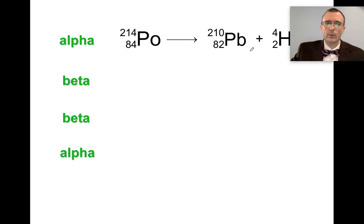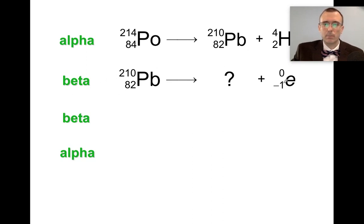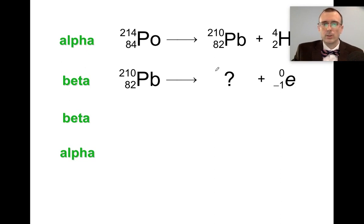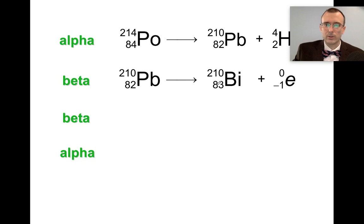Lead-210 itself is not stable and undergoes beta decay. We write down our beta particle and ask: what minus 1 is 82? The answer is 83. And what plus zero is 210? That's 210. So it's going to be element 83, mass number 210. Element 83 is bismuth. So we get bismuth-210.